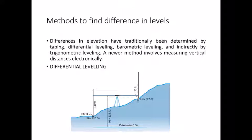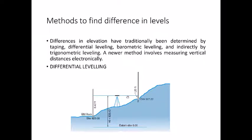In differential leveling, between the two points whose elevation difference we want to find out, we place the instrument. It doesn't have to be between them — it can be anywhere so that the two points are visible and the height of the instrument can cover both points. If a point was somewhere far above, this setting wouldn't allow you to view it, so you'd have to increase the height using the tripod legs or move the instrument.